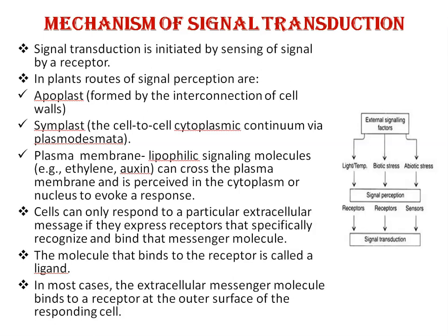Now, mechanism of signal transduction. Signal transduction is initiated by sensing of a signal by receptors. Looking at this diagram, these are external signaling factors including light, temperature, biotic stresses, and abiotic stresses. These signals are perceived by receptors, which are located on the plasma membrane, maybe in the cytoplasm, endomembrane system, or in the nucleus. In plants, routes of signal perception are of mainly three types: apoplast, symplast, and the plasma membrane route.